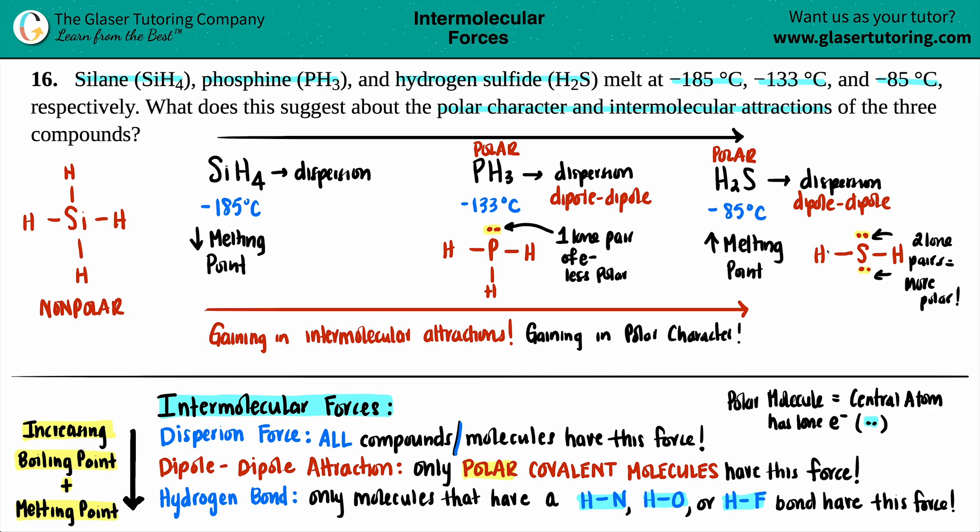So this basically answers the question. As you're going from a low melting point to a high melting point, you're gaining in those attractions and you're gaining in polar character. That is the end, so let's just box this answer off, and we are done with this question.